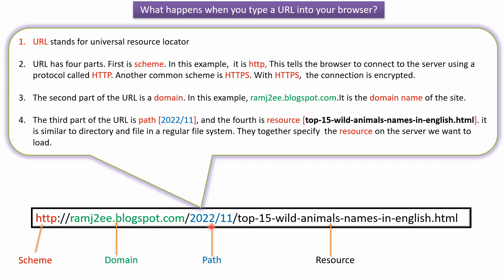The third part of the URL is the path. In this example, the path is 2022/11. The fourth part of the URL is the resource — in this example, that is 'top-15-wild-animals-names-in-English.html'. The path and resource are similar to a directory and file in a regular file system; together they specify the resource on the server we want to load.